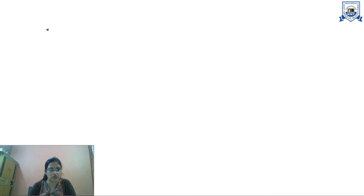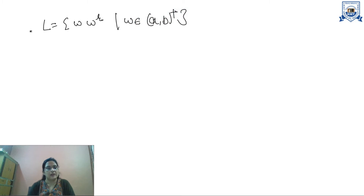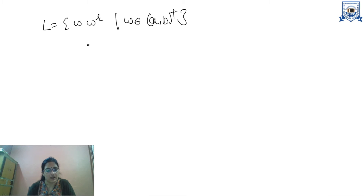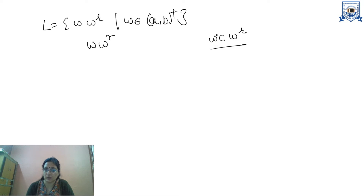Let's take the example of non-deterministic pushdown automata. Let L be a language which contains ww^r, where w is a string containing symbols a and b. Here w is a string. I already discussed a related numerical for deterministic pushdown automata in my previous video. For this example, we push all the elements of w and pop all the elements corresponding to w^r.